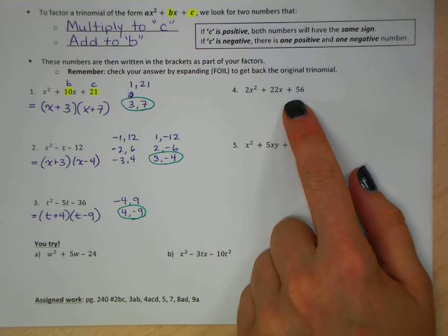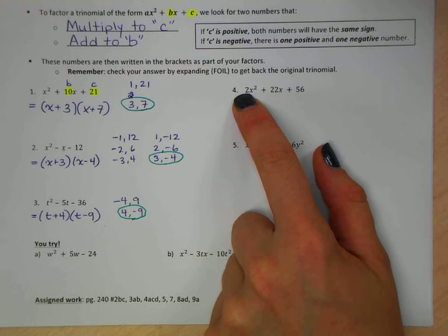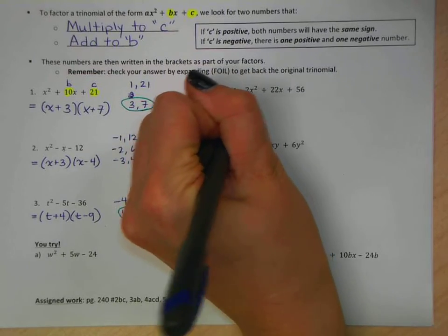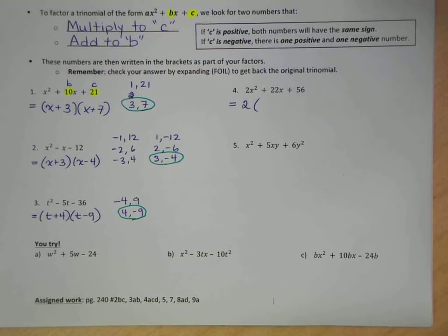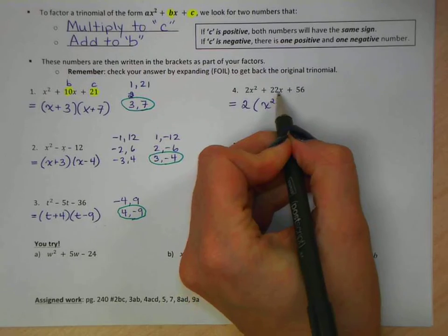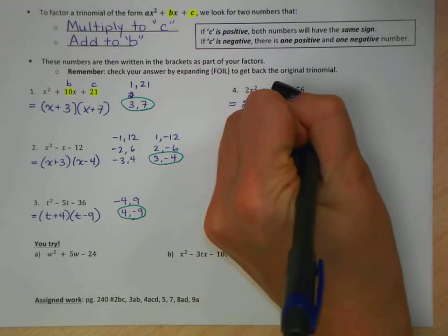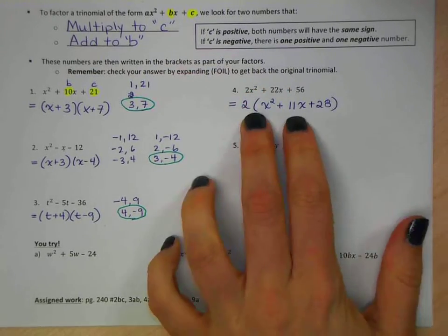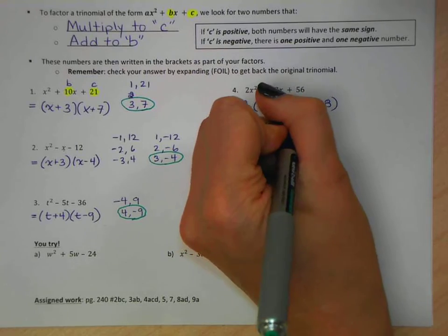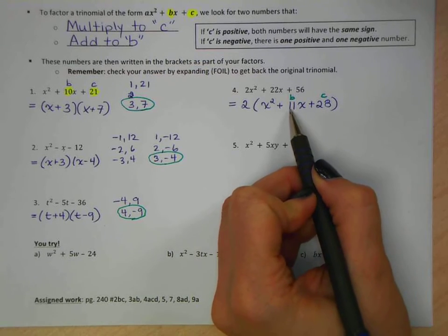Great. Remember how I said we need to always look for common factoring first? We see that our a value is not 1. So we need to check that we can common factor this out. So 2, 22, and 56 can all be divided by 2. So the way we do this, just like we did in our common factoring lesson, we're going to basically divide all of these terms by 2. 2x squared divided by 2 leaves us with x squared. 22x divided by 2 gives us 11x. And 56 divided by 2 is 28.